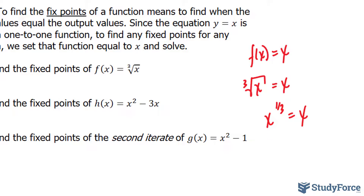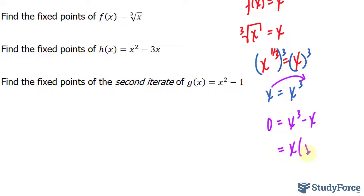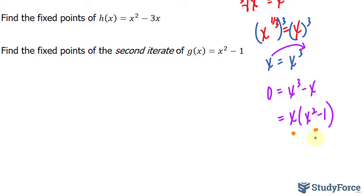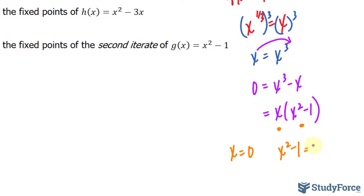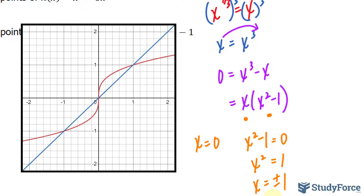We cube both sides of the equation. We get x is equal to x cubed. Bringing that over, we end up with 0 equals x cubed minus x. Factoring out an x, we end up with two factors: x and x squared minus 1. Each of these needs to be set to 0. Our first fixed point is x equals 0, and our second fixed point gives x equals plus or minus 1. So there are three fixed points.